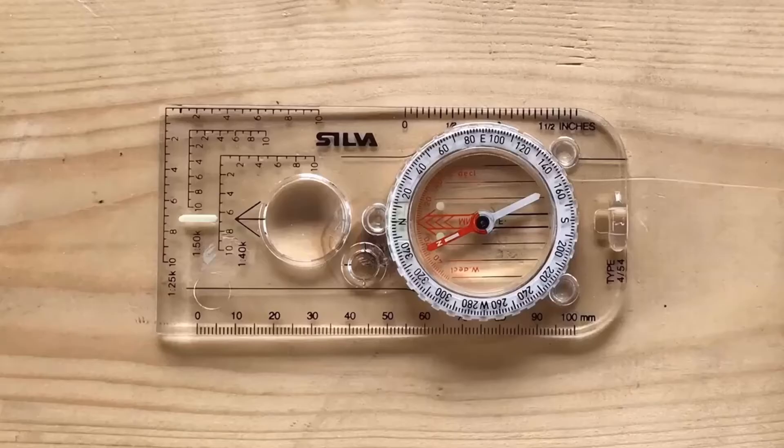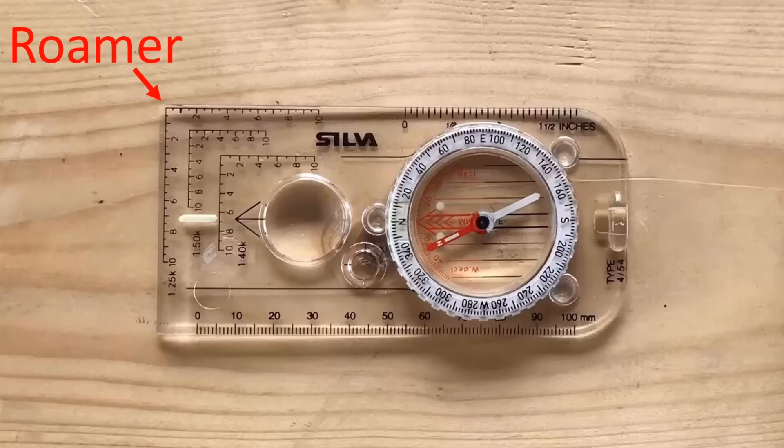If we find that the scale bar on our map is too short to do this, we can actually use the roamer on our compass to help us. The roamer comes in a number of scales: this one has 1 to 40,000, 1 to 50,000, and 1 to 25,000, and 1 to 25,000 is the scale of my map.